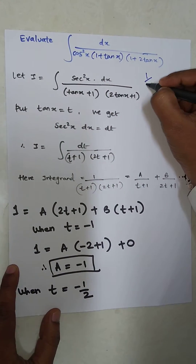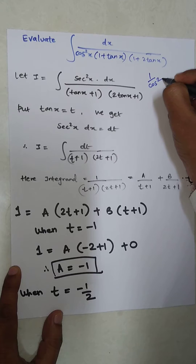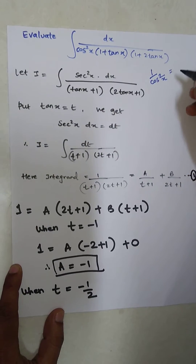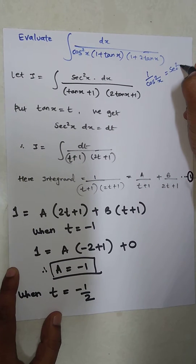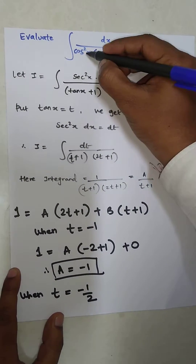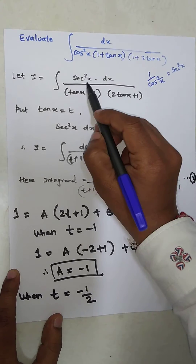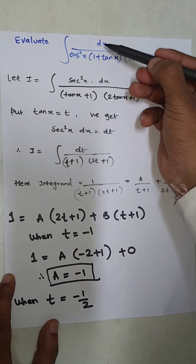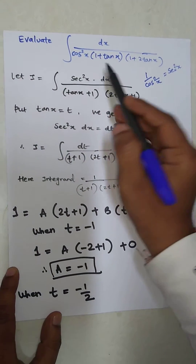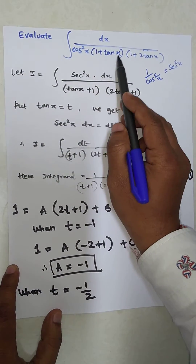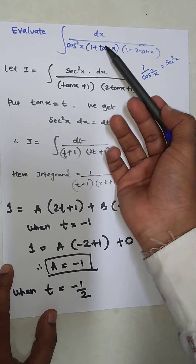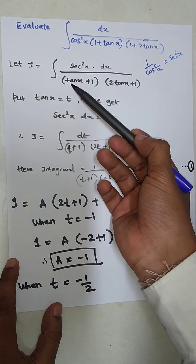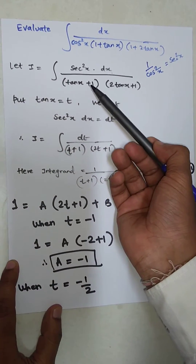Now, 1 upon cos²x is equal to sec²x, so we are replacing it with sec²x. The dx will remain as it is, and the two brackets are rewritten in the format (tan x + 1) and (2 tan x + 1).